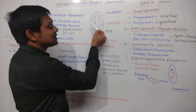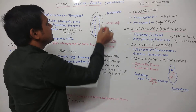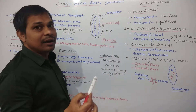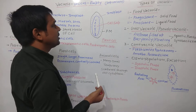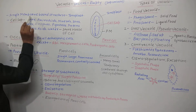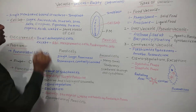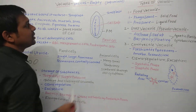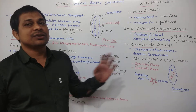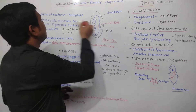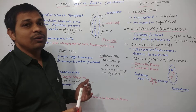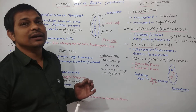The content or fluid inside the vacuole is known as the cell sap or vacuolar sap. It is surrounded by a unit membrane — a single-layered membrane — known as the tonoplast. The vacuole is a single membrane-bound structure, and that single membrane is known as the tonoplast. The tonoplast is similar to the cell membrane or plasma membrane in structure and chemical composition.